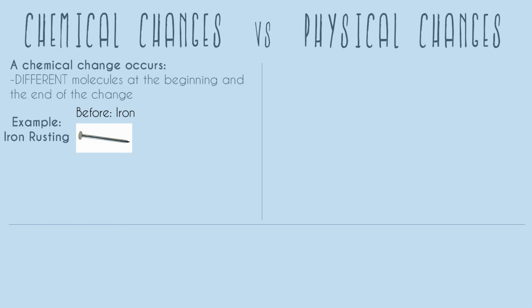So after the change, we have the iron left over from our nail. It didn't all turn into rust, but we also have this new molecule — a rust molecule.